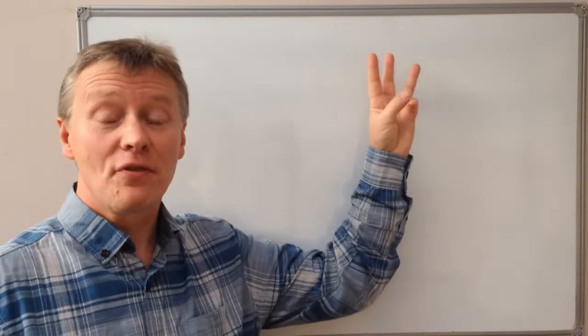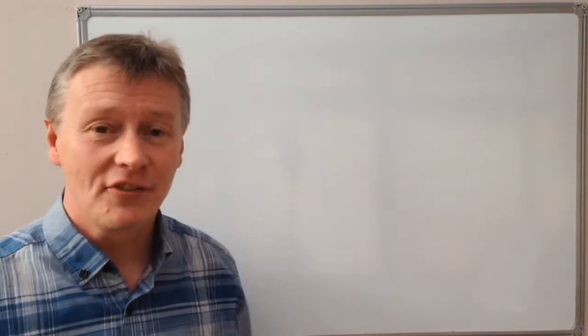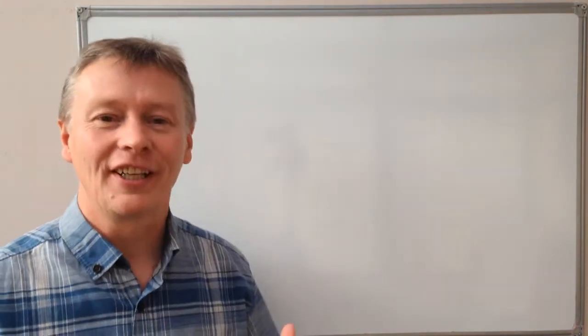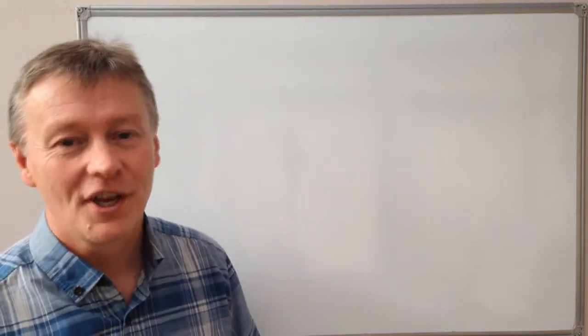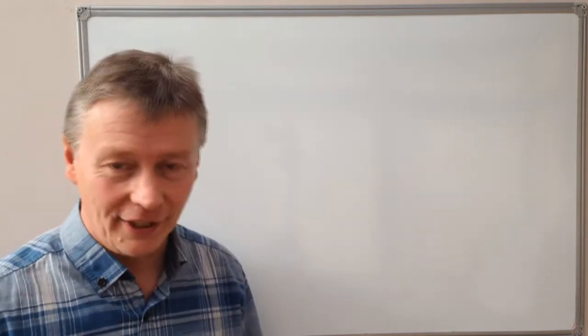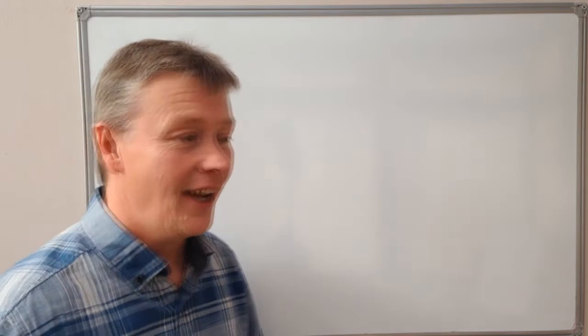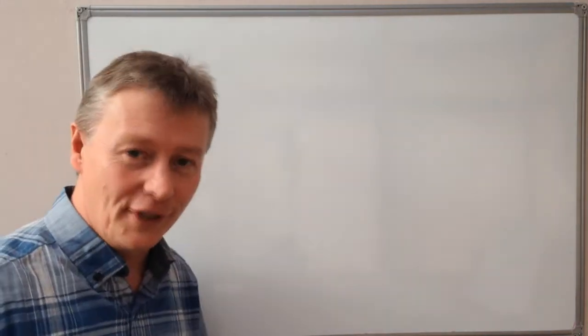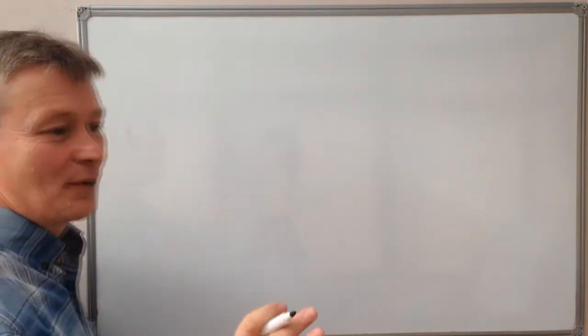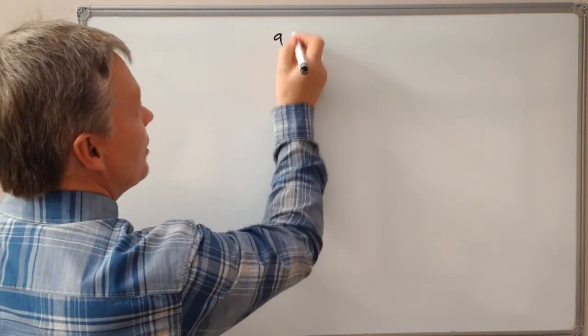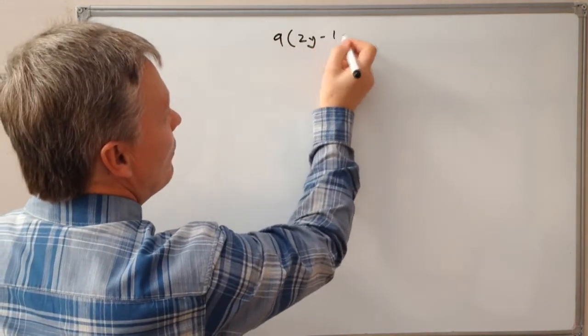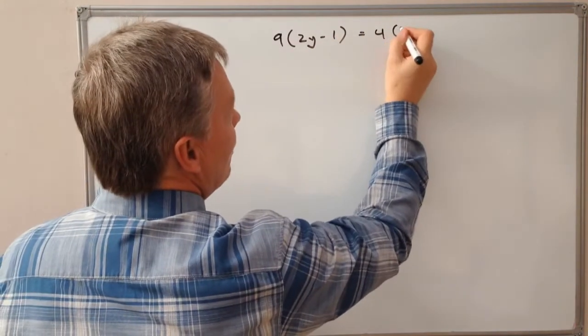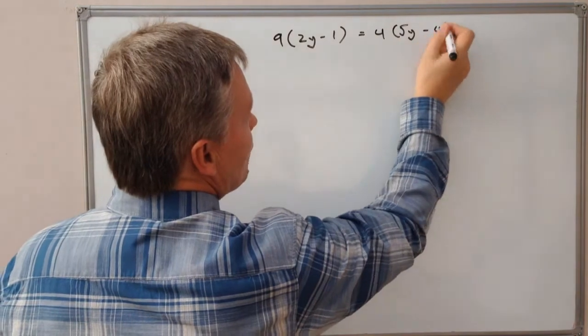Hi and welcome to 3 Minute Maths. This is the third video in a playlist on solving linear equations, working out the value of a letter in a particular linear equation. What I did in the previous video is I looked at this particular equation which is 9(2y - 1) and that equals 4(5y - 4).